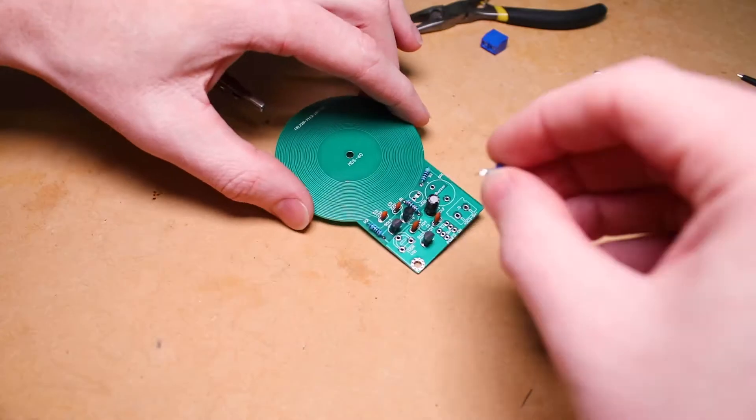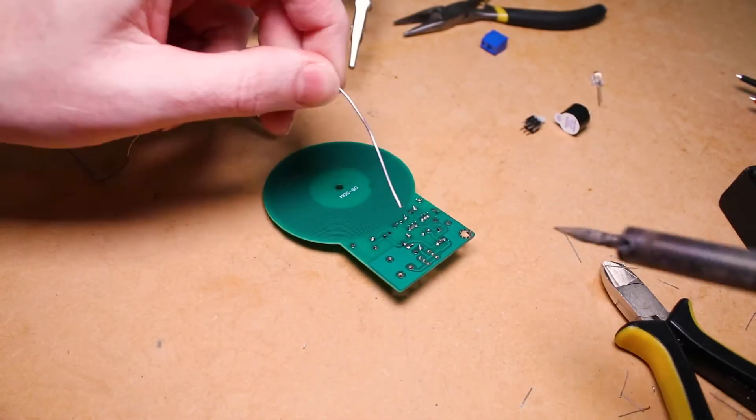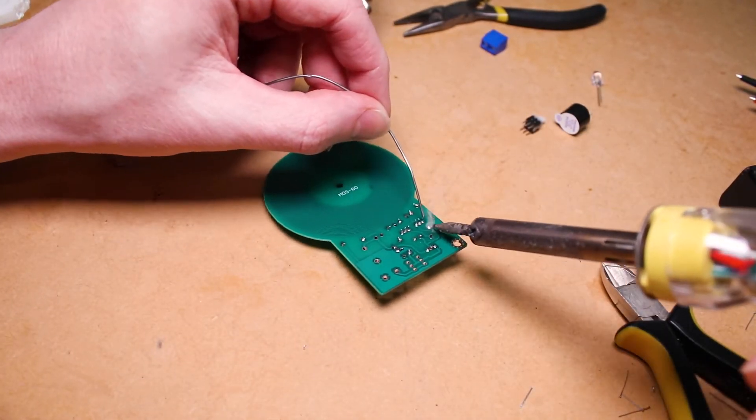To control the threshold for when both the LED lights up and the buzzer sounds, a trim potentiometer is added to the circuit board.